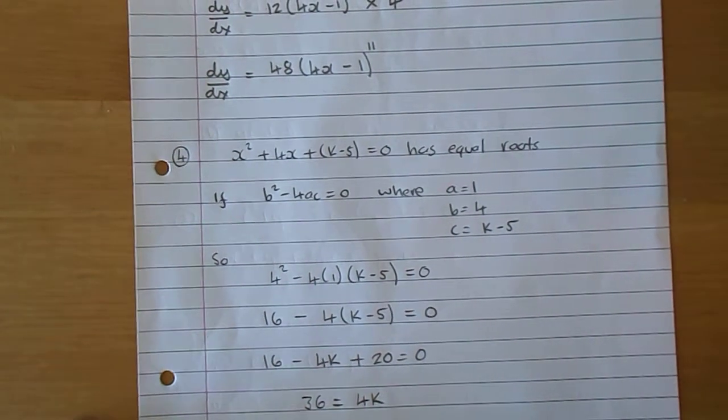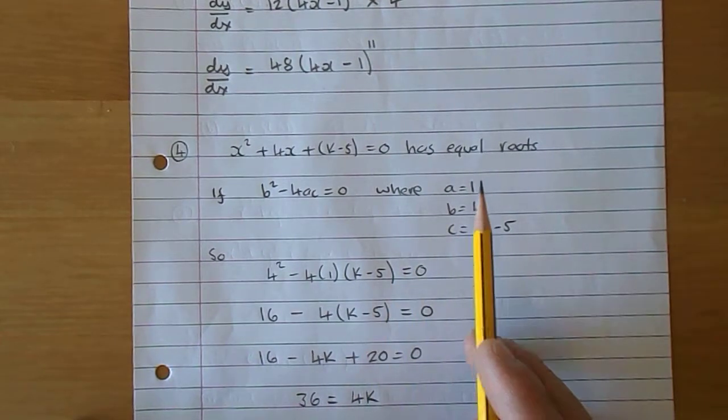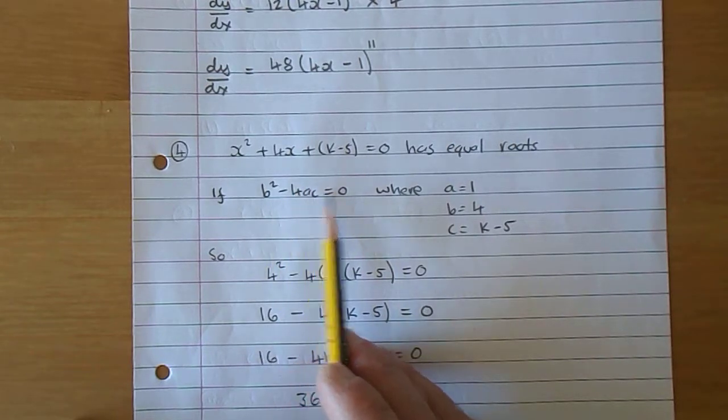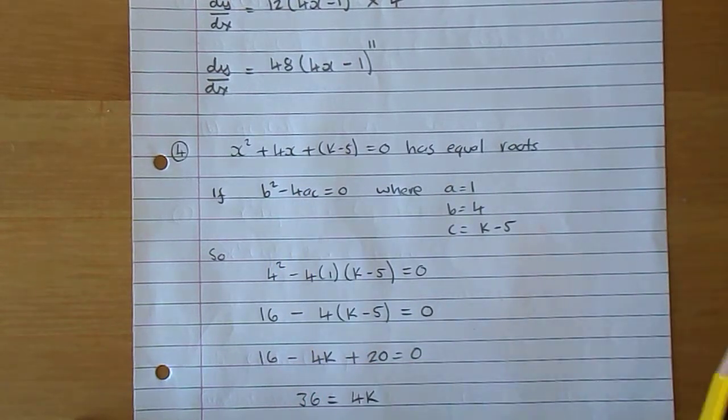Well it has equal roots, thinking back to nat 5, when the discriminant, the part of the quadratic formula, is equal to 0.